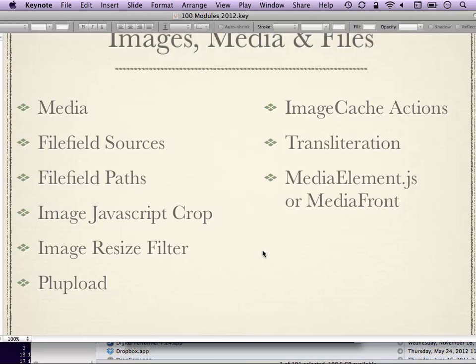FileField Paths ties into the core token module and lets you choose where files are saved in a more powerful way than what Drupal has built in. If you don't want all your images living in your root files directory, and you want to build up a complex directory structure like files slash user ID slash node title slash whatever, FileField Paths is a good way to do that.